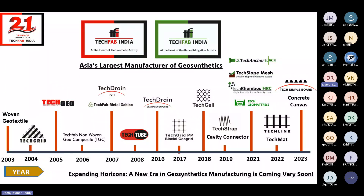In 2017, we started biaxial geogrids made of polypropylene. We then entered the geosale and geostrap market, and we manufacture in-house cavity connectors used in RS wall connections. In 2021, when the world stopped due to COVID, we expanded by setting up a new factory for geo-hazard mitigation solutions at Haridwar, manufacturing self-drilling anchors and slope protection measures. In 2022, we started TechLink — uniaxial high-strength geogrids — and erosion control mats.